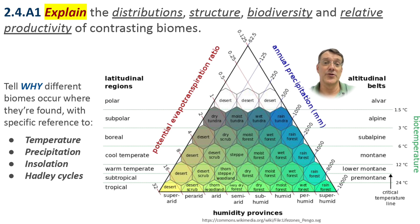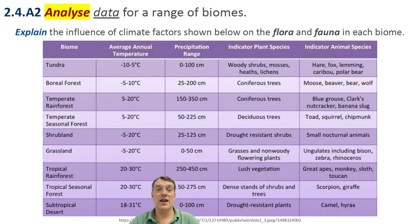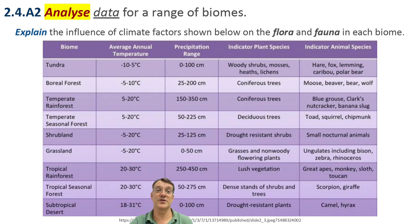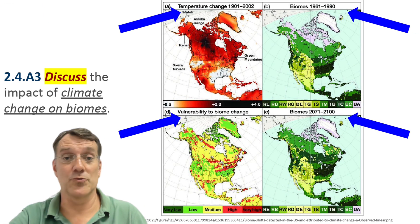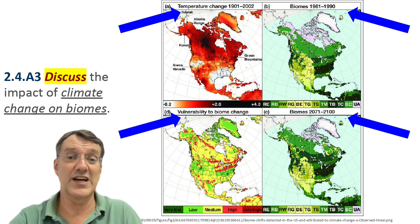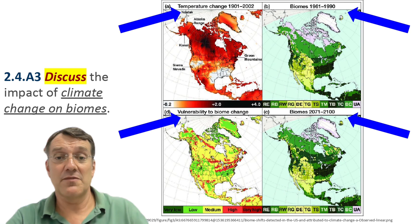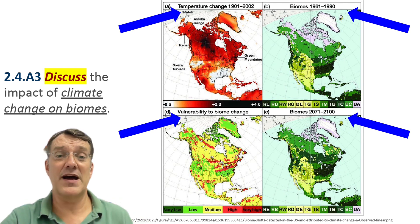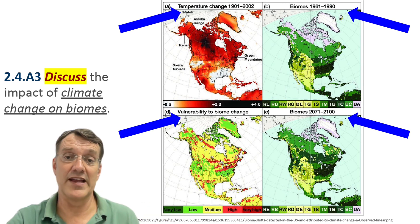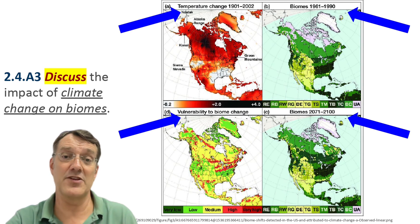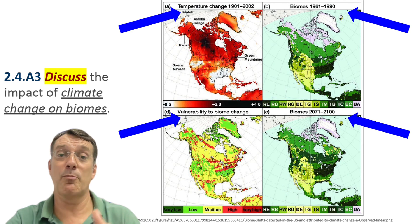Note how both latitude and altitude influence biome type due to their effects on temperature and precipitation. Analyzing biome data reveals how climate factors influence flora and fauna adaptations. For example, tundra environments with cold temperatures and minimal precipitation support specialized plant species like mosses and lichens, and animals adapted to cold like caribou and lemmings. Climate change is impacting biomes around the world — these maps show temperature changes from 1901 to 2002, biome distributions from 1961 to 1990, projected biomes for 2071 to 2100, and vulnerability to biome change. Areas with high vulnerability face significant ecological transformations as climate zones shift toward the poles and upward in altitude.